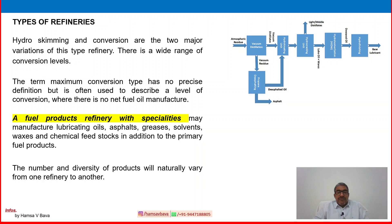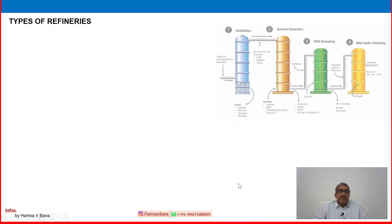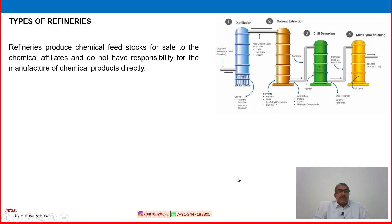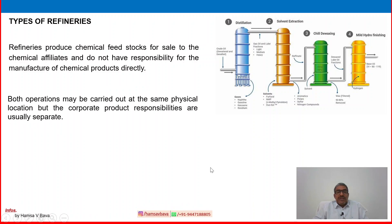The number and diversity of products will naturally vary from one refinery to another. Refineries produce chemical feedstock for sale to chemical affiliates and do not have direct responsibility for manufacture of chemical products. Both operations may be carried out in the same physical location, but corporate product responsibilities are usually separate. These include solvent extraction, various solvents, naphtha, aromatics, wax, base oil, and lubricating oil — these are the basic concepts of manufacturing lube-based products.